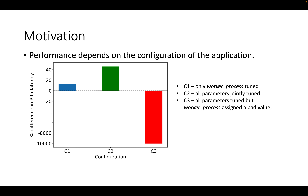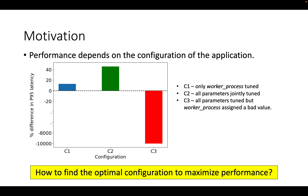Configuration C2 corresponds to the configuration where we tune all the parameters of the application, producing up to 46% improvement in P95 latency. Configuration C3 corresponds to all the parameters having optimal values except for the worker process parameter, which is assigned a valid but bad config, and that reduces the performance of the application by 100%. So this begs the question: how to find the optimal configuration to maximize performance.